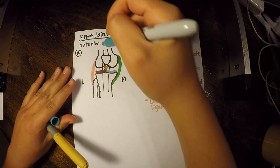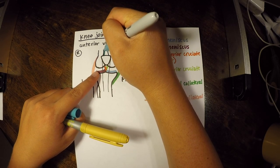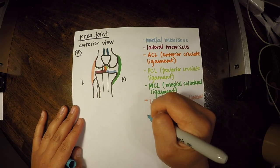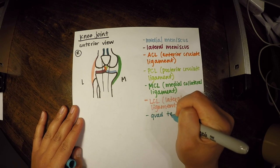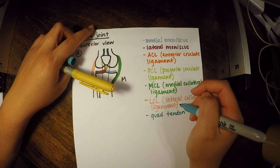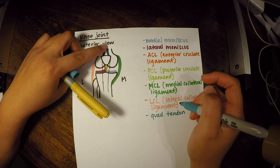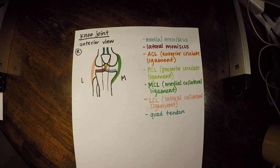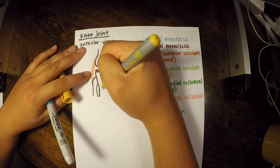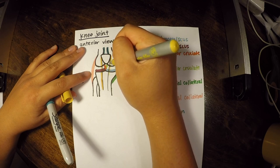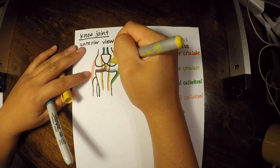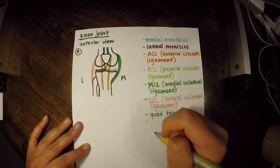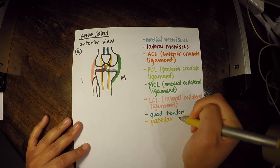Superiorly, the quadriceps tendon attaches the quad muscle to the patella. Inferiorly, what connects the patella down to the tibia is technically called the patellar ligament — since ligaments attach bone to bone — but it's more commonly known as the patellar tendon. Either term refers to the same structure.